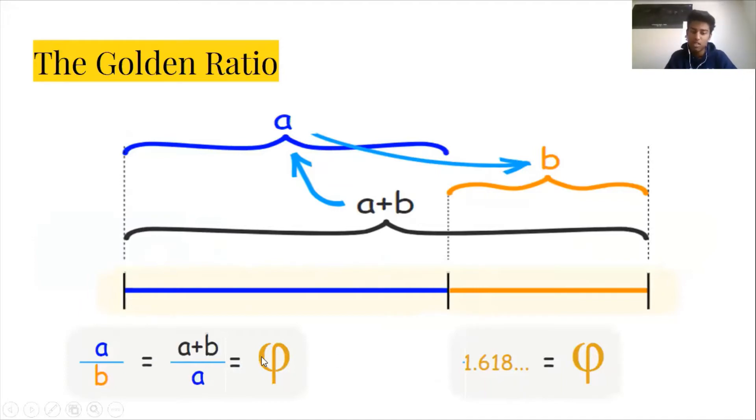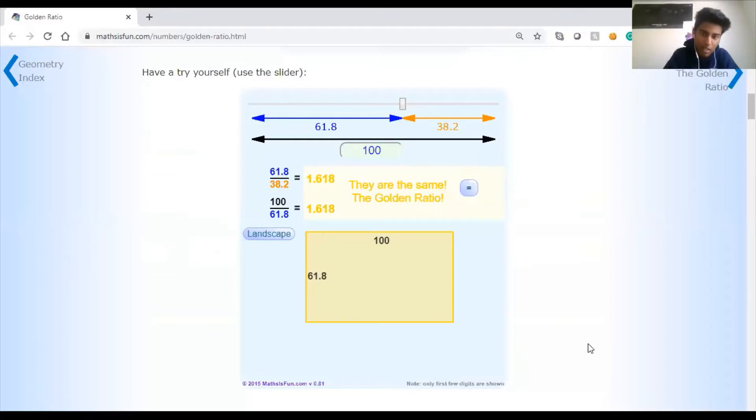And again, the golden ratio is represented by this Greek letter called phi. And I'll just read this cool little interactive right here, which I'll link down in the description below so you can play with it after the video. And you can see here's line segment a and here's line segment b. And that's the ratio of a to b. And that's the ratio of a plus b to a.